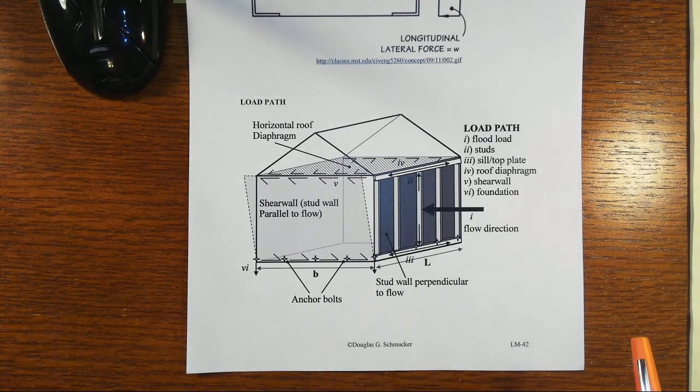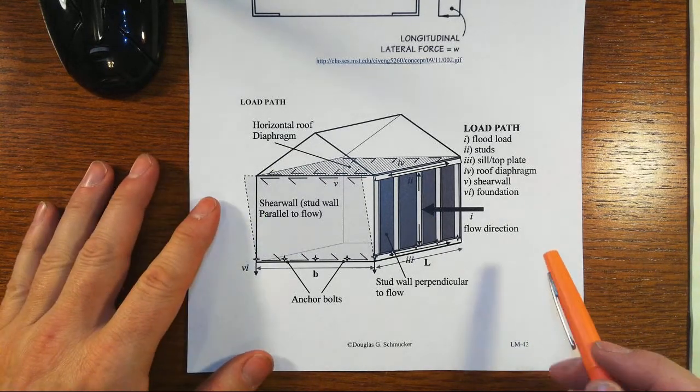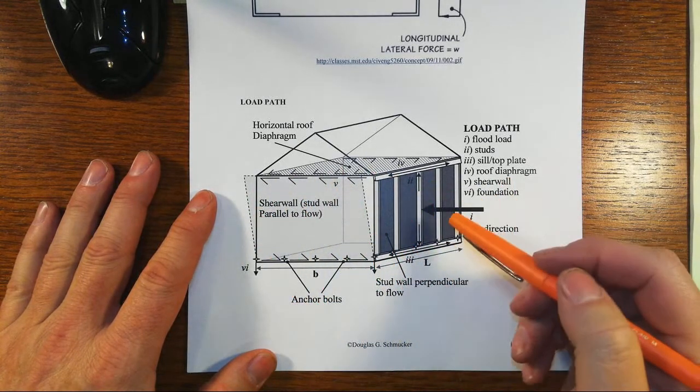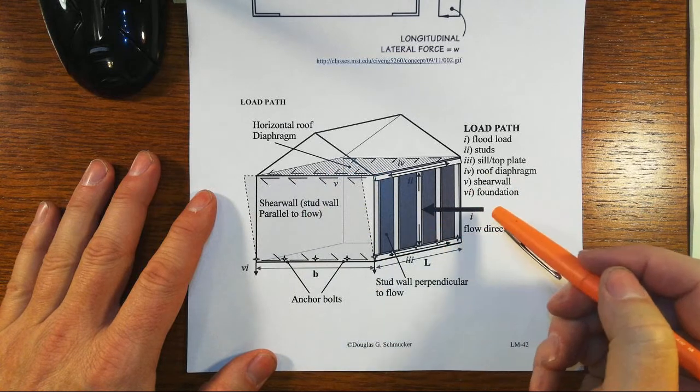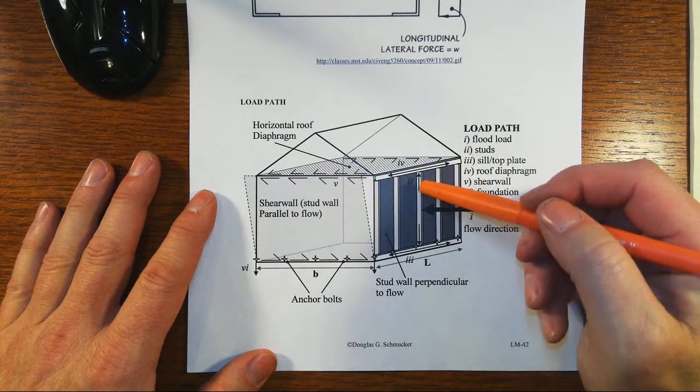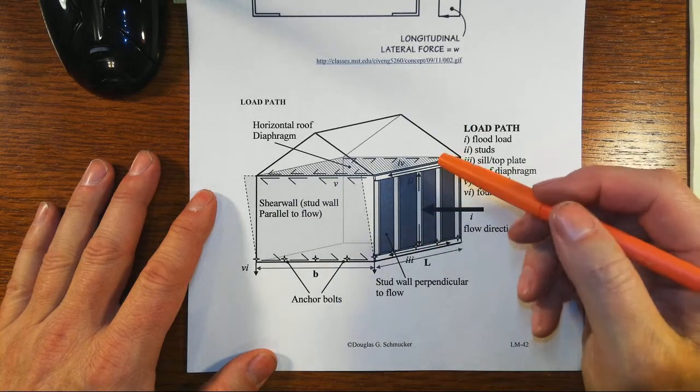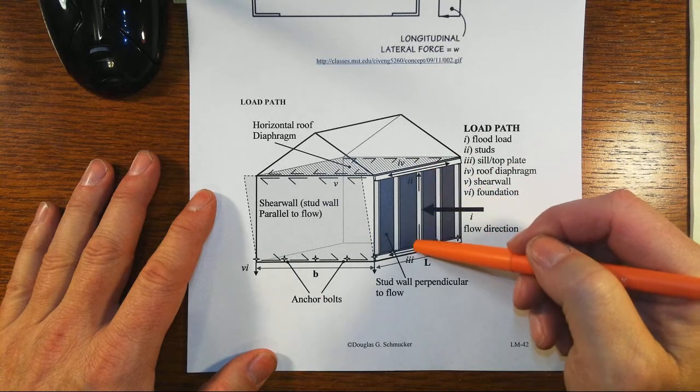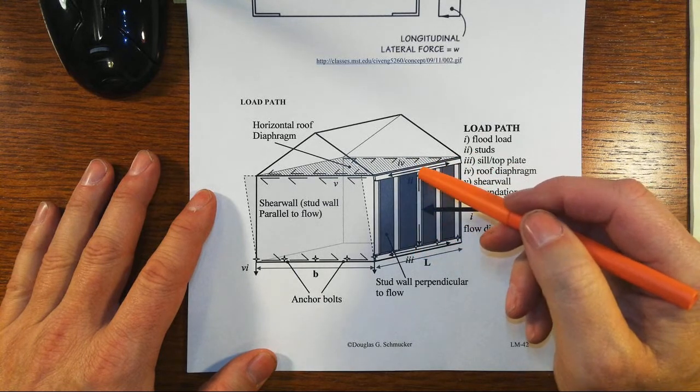And so one last little sort of view of all this on this load path here is now we got sort of a nicer three-dimensional view of the building. Just as a quick review, we've got these lateral forces. This is really showing wind pressures. The vertical studs in the wall then will act as simple beams transferring effects up to, both up and to the bottom of that vertical beam.